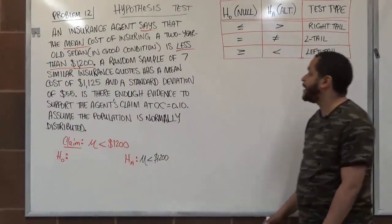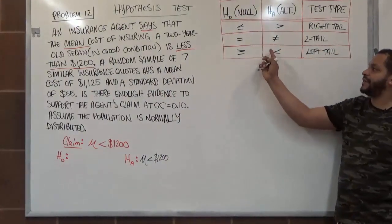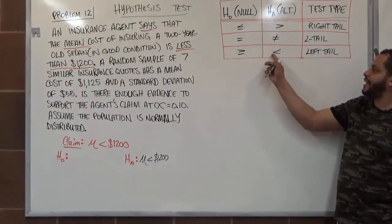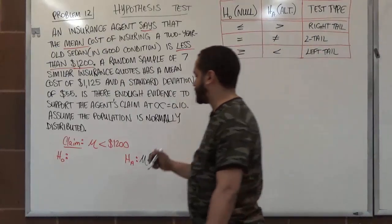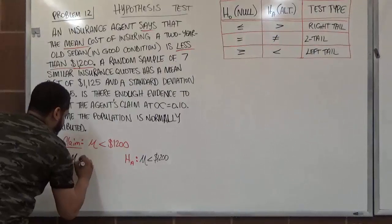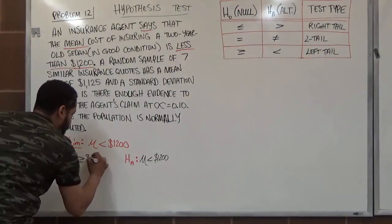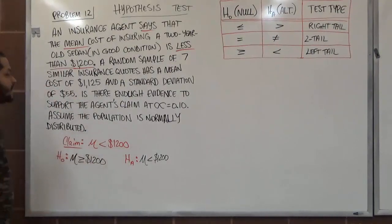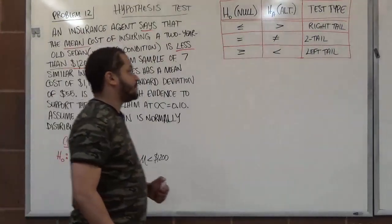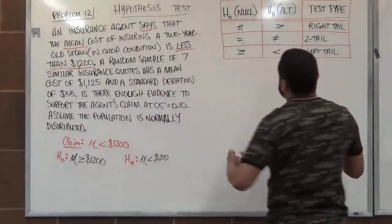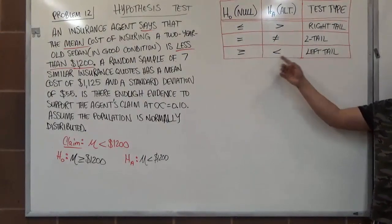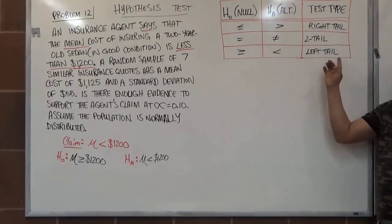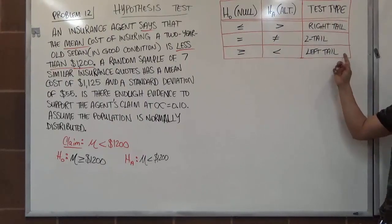The counterargument becomes the null hypothesis. Since the alternative is less than $1,200, the null hypothesis states the mean is greater than or equal to $1,200. This covers steps one through three. For step four, we determine the tail type — based on the less than symbol, this is a left-tail test.